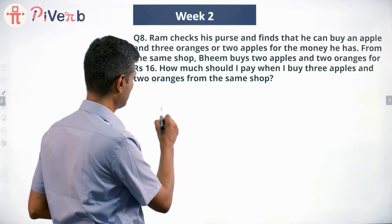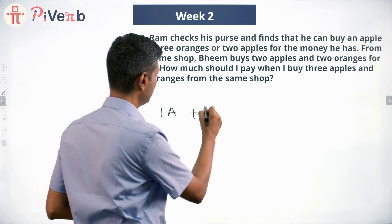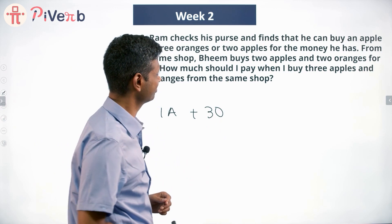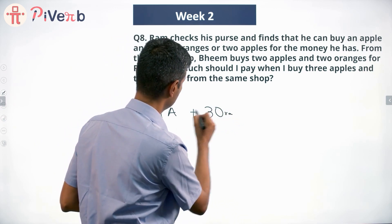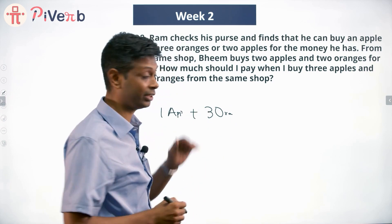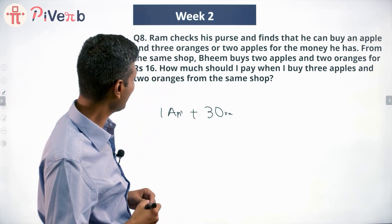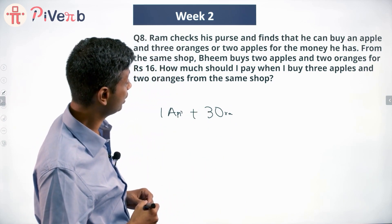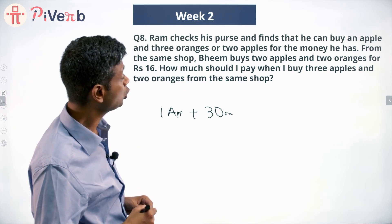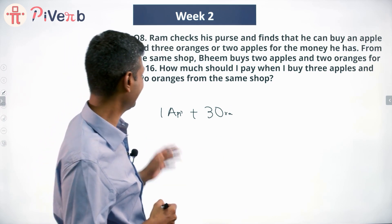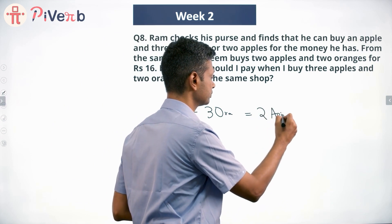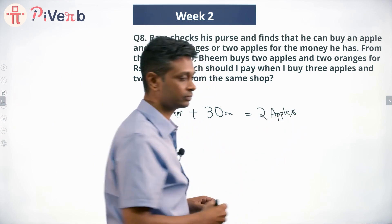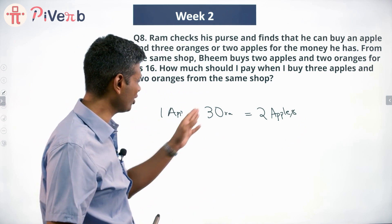This part is easy. One apple and three oranges he can buy - otherwise it looks like thirty. So one apple and three oranges he can buy, or two apples for the money he has. He can either buy this or he can buy two apples: one apple and three oranges, or two apples.